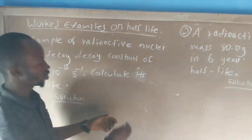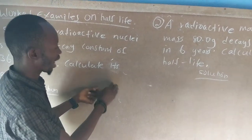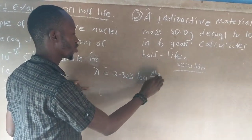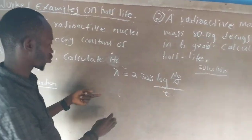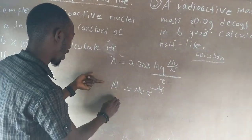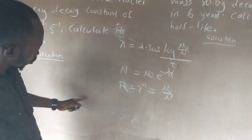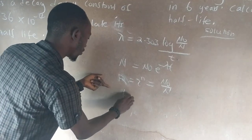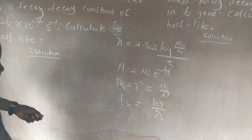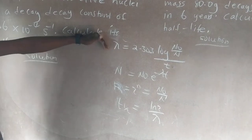I gave you the formulas on the first video where we derived the equations of half life. We have the decay constant equal to 2.303 times log of N₀ over N, divided by t. We also have N equals N₀ e to the power minus lambda t, and the disintegration ratio N₀ over N. We also have the half life T½ equal to ln 2 over the decay constant. These are the common formulas to solve any half life question for WASC, NECO, and JAMB.